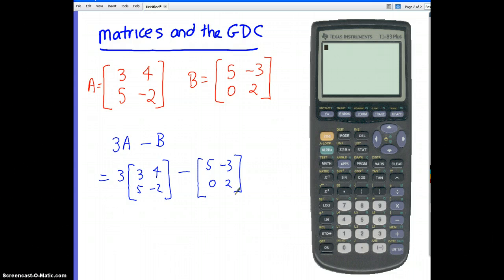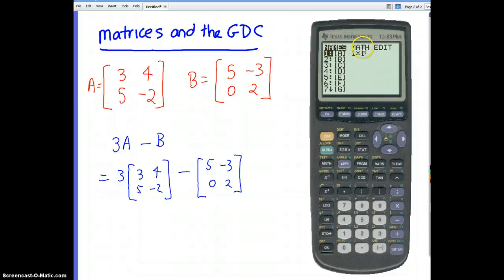We have an entire matrix menu which is second X to the minus 1. So I'll press second X to the minus 1, and notice we've got names, math, and edit. Today we're going to be pretty much doing the names and the edit. The math, when we get onto determinants and inverses, that's where we'll go for that.